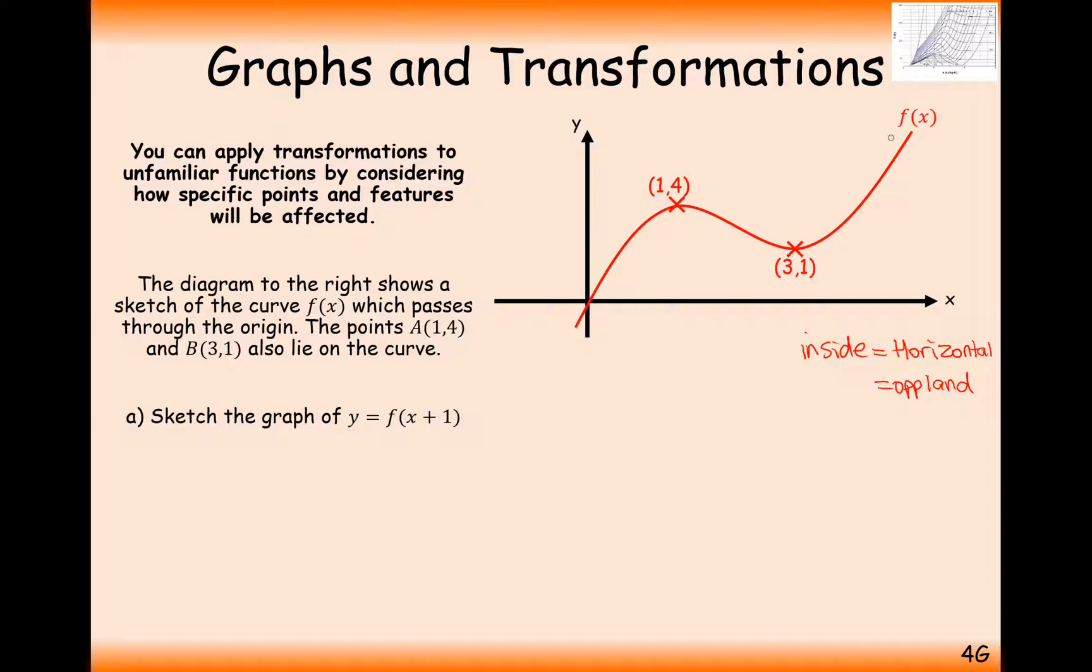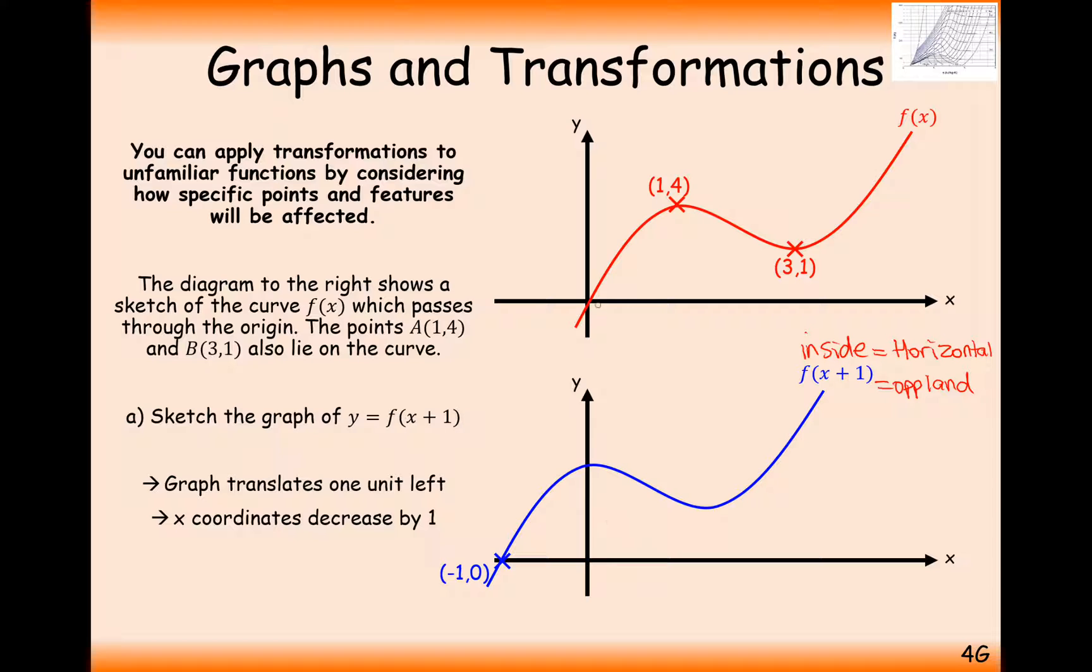So all of these coordinates here, first plot them and then sketch your graph through it. So what we'll have here is an intersection at 0, 0, which will move to minus 1, 0.